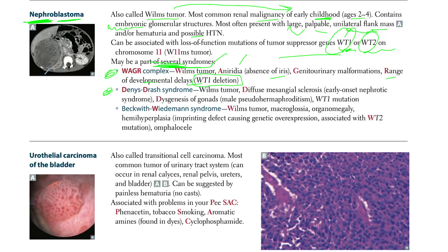Another associated syndrome is Denis-Drash syndrome, in which you have Wilms tumor, diffuse mesangial sclerosis, early onset nephrotic syndrome, dysgenesis of the gonads in males, and male pseudohermaphroditism.